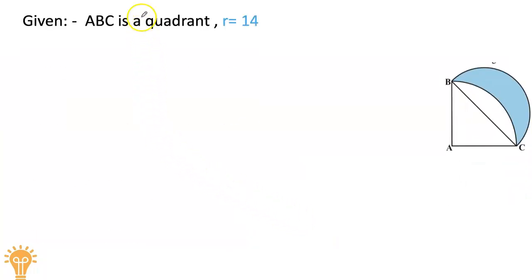ABC is a quadrant and the radius is 14 centimeters.